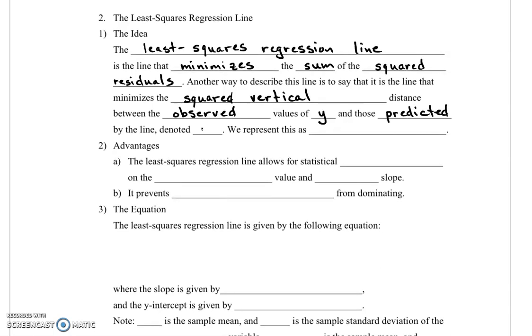The ones that are predicted we call y hat. Writing this in half math, half words, we represent it as minimize the sum of the residuals squared.